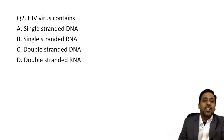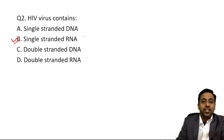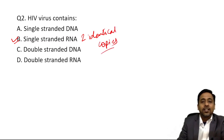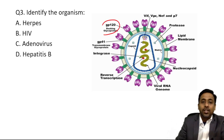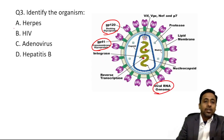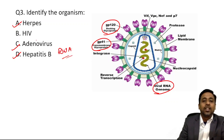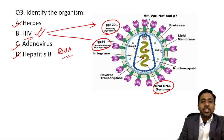HIV is a single-stranded RNA virus with two identical copies. In the image, you can see GP120, GP41, and the viral RNA genome. Among the options given — herpes, adeno, and hepatitis are DNA viruses — the only RNA virus is HIV. This is confirmed by the viral RNA proteins GP120 and GP41.